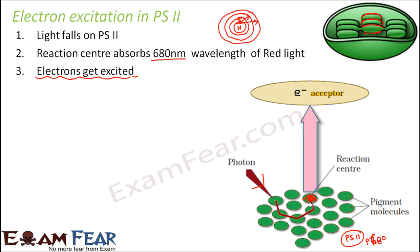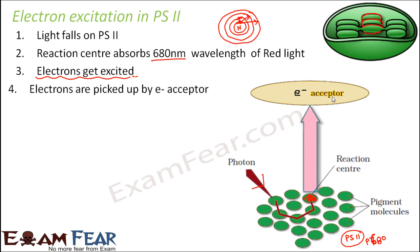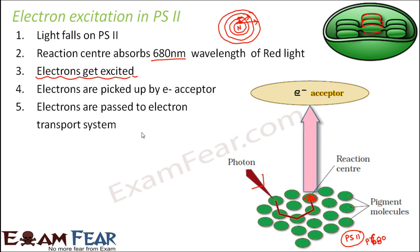Similar is the case here. When the reaction center supplies so much energy, the electron gets excited and jumps out. It goes to a primary acceptor which accepts the electron. This arrow shows that the electrons get excited to a higher energy level and are taken in by the primary electron acceptor — some molecule that accepts that electron. Then the electrons are passed to the electron transport system, which we will discuss in the next slide.